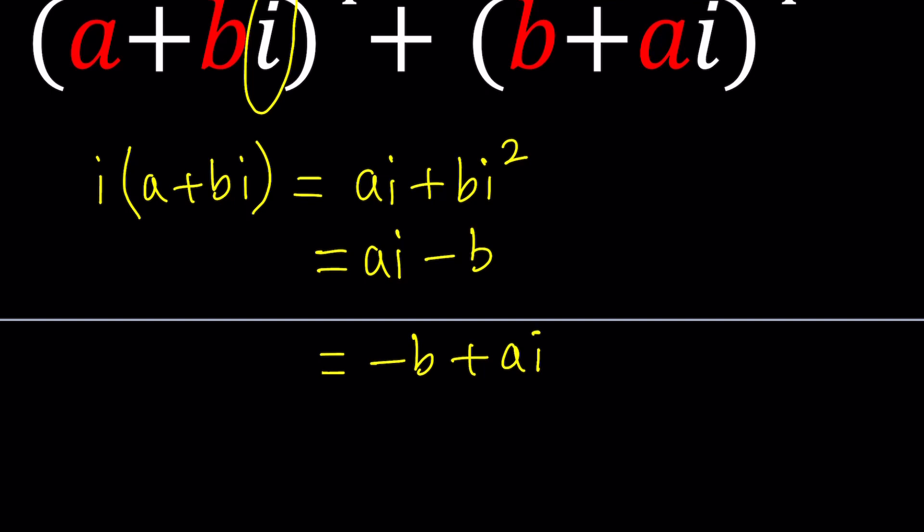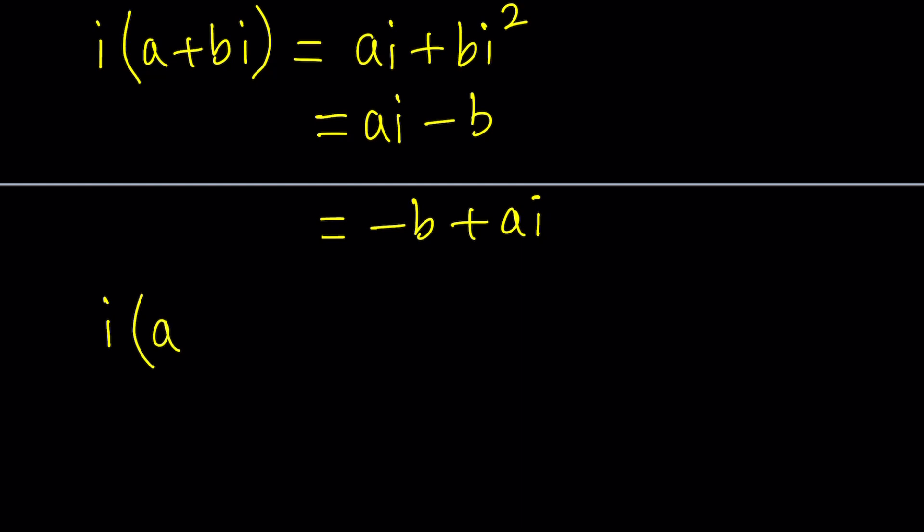So from here we get ai - b or you can write it as -b + ai. I was able to kind of switch them around but that brought an extra negative to the real part. So what can I do? Let's try the following. Instead of multiplying a+bi let's multiply its conjugate a-bi by i so that we can get ai - bi² which is ai + b which is b + ai. And this is awesome.